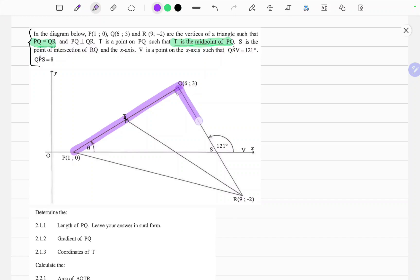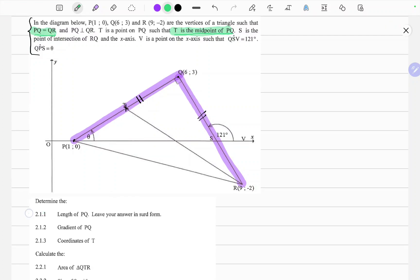The distances or the lengths of these line segments are the same. So this distance here of this line segment from there to there is the same as this distance. So the first question says calculate the length of PQ. Leave your answer in surd form.